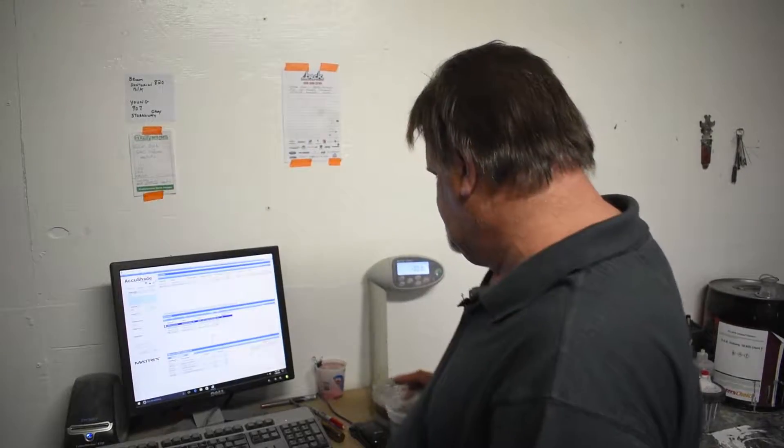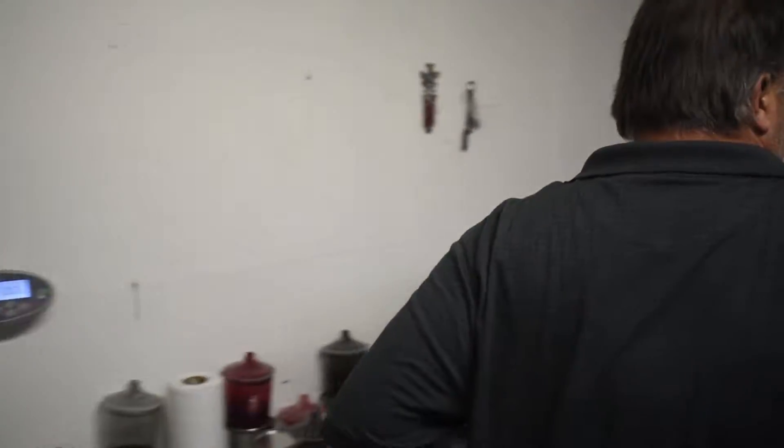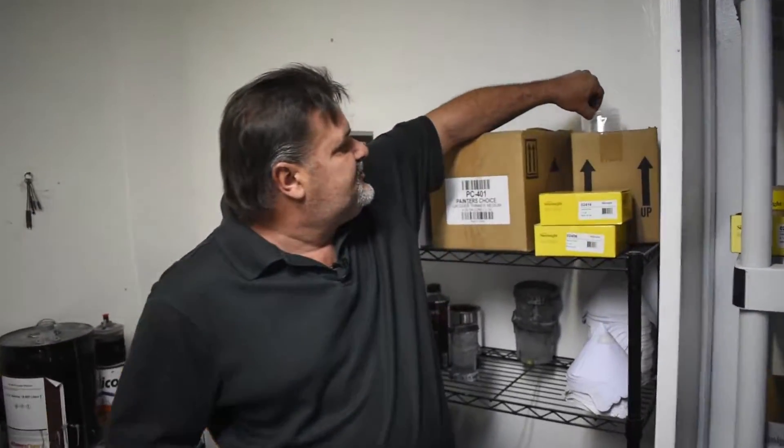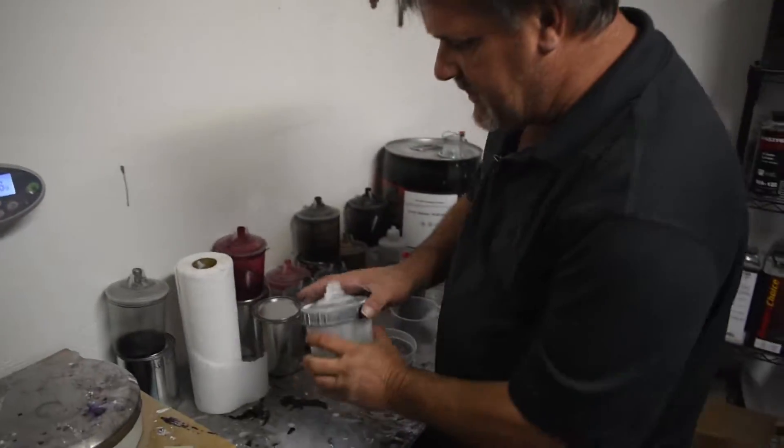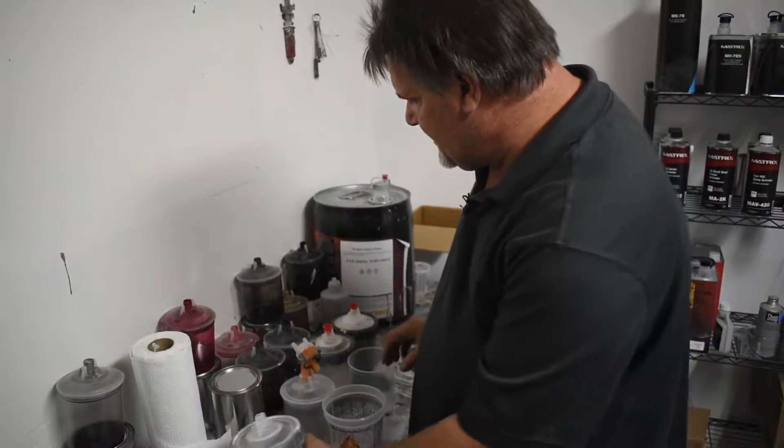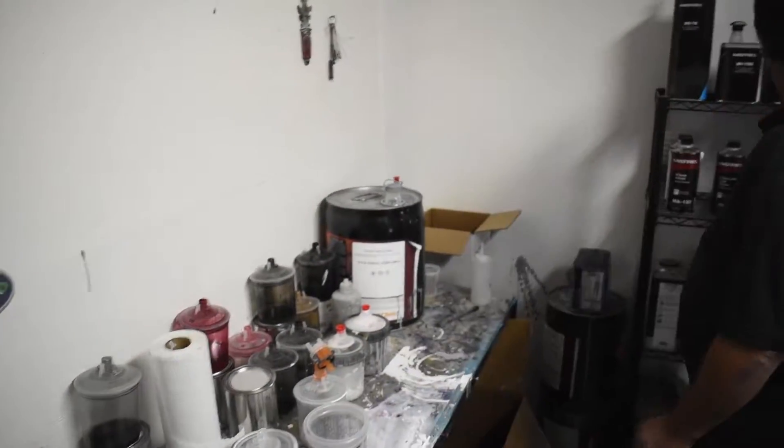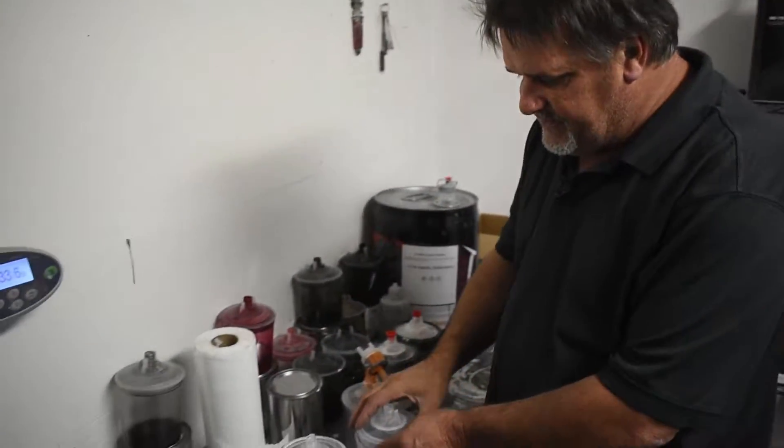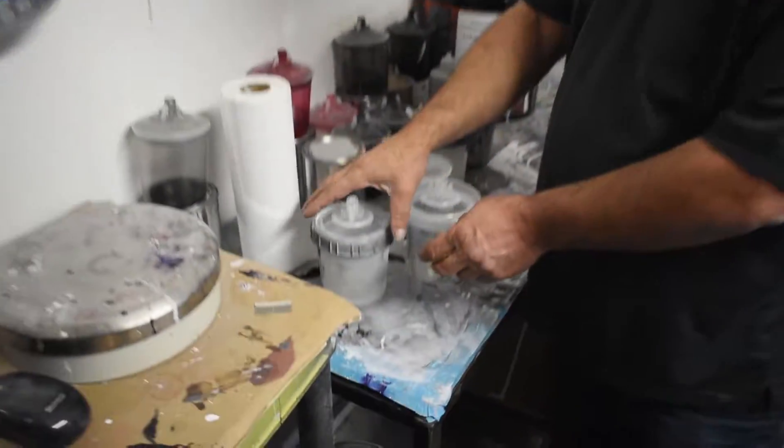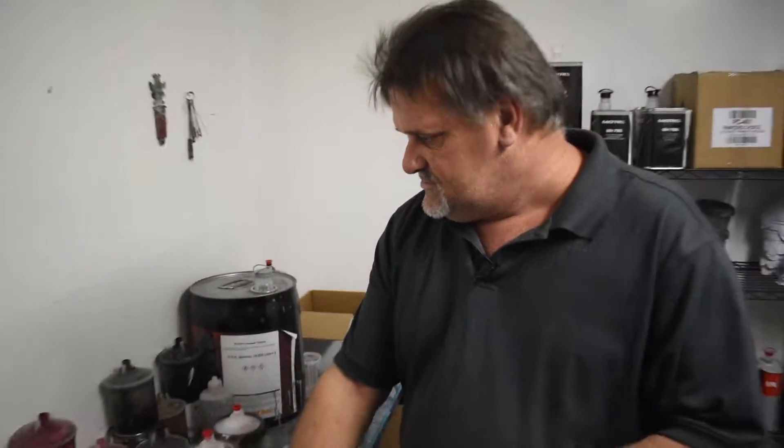After the paint is mixed, then it comes over to our painter, which he will put into this PPS cup. It goes inside with the PPS lid. The top goes on, and at that point, it's ready to spray. You click this on the gun, he's ready to go.